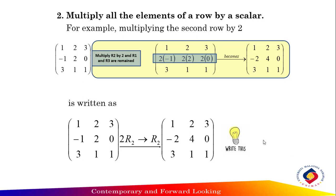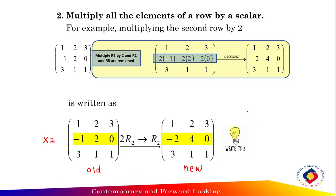The second method of elementary row operation is to multiply all the elements of a row by a scalar. For example, we multiply the second row by scalar two — all the elements in row two are multiplied by two, giving negative two, four, zero.